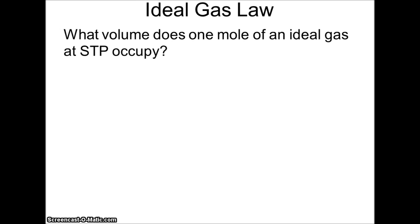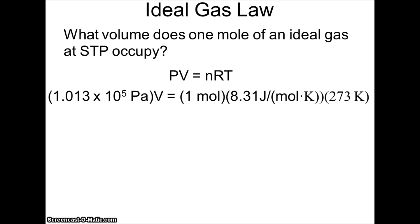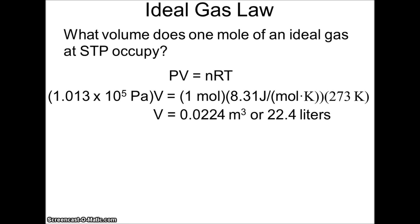What volume does one mole of an ideal gas at STP occupy? We saw that PV/T equals a constant, which is N times R, where N is the number of moles and R is the gas constant. So it's one mole times 8.31 J/(mol·K) times 273 K, and solving for volume we get 0.0224 cubic meters, which is 22.4 liters.